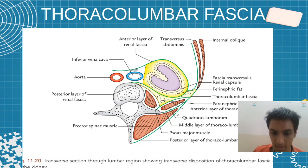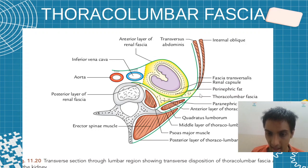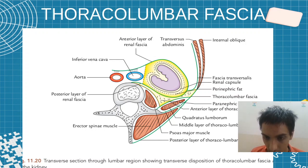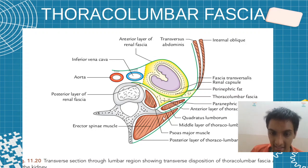As I told, it is blending this muscle — erector spinae — and this is the posterior part of the thoracolumbar fascia. This is the anterior part, which encloses the quadratus lumborum, and this is the middle layer of it. So we have middle, anterior, and posterior parts.